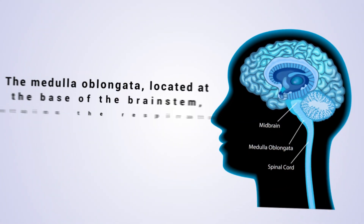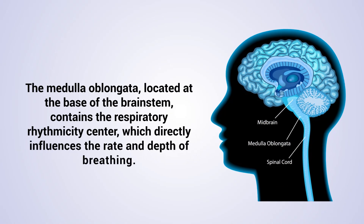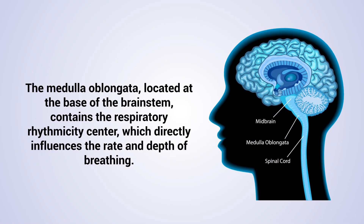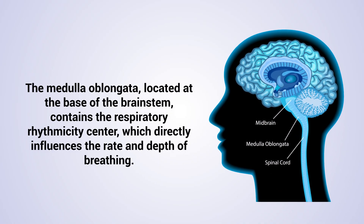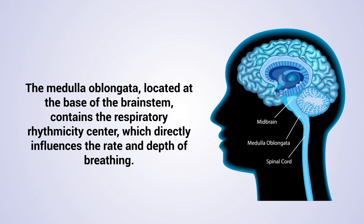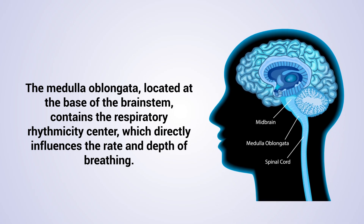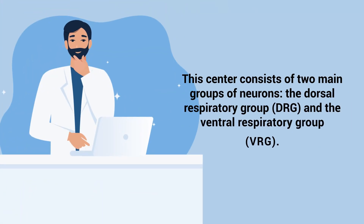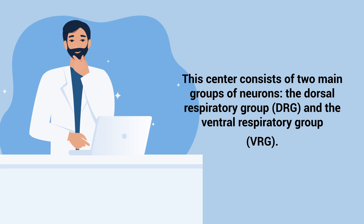The medulla oblongata, located at the base of the brainstem, contains the respiratory rhythmicity center, which directly influences the rate and depth of breathing. This center consists of two main groups of neurons: the dorsal respiratory group and the ventral respiratory group.